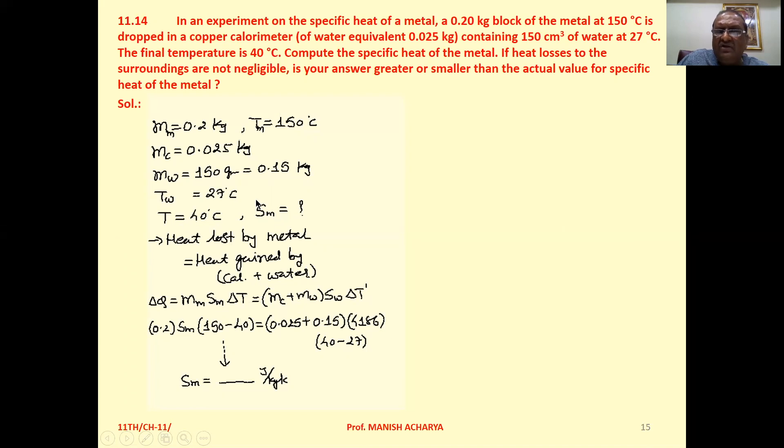We want to calculate the specific heat of metal. Now see, metal piece is at 150 degrees Celsius. Water and calorimeter are at 27 degrees Celsius. And final temperature of the system is 40.